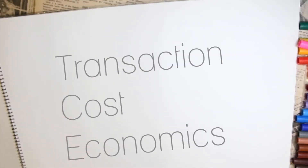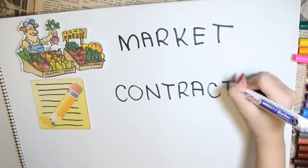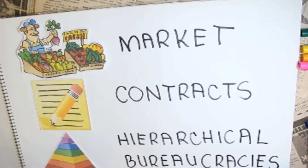Transaction Cost Economics, a theory by Oliver Williamson, organizes our seemingly incomplete and primitive perceptions of the economy. This theory argues that there are three important governance structures that form the blueprint for economic transaction.